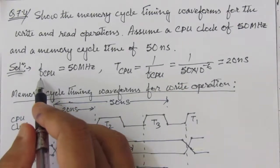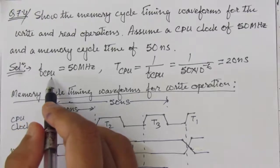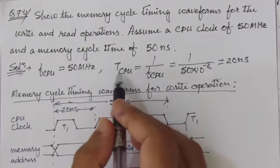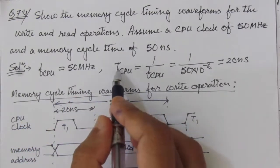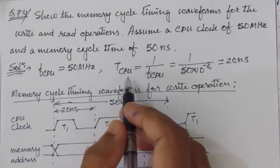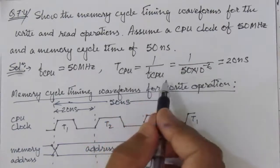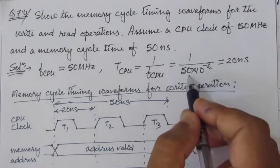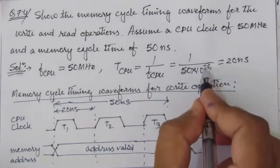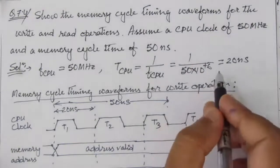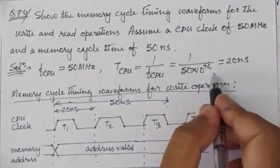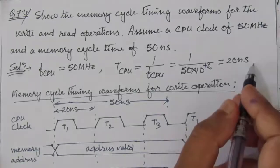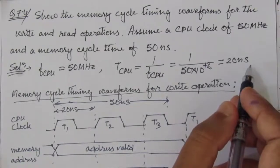We are given that the frequency of the CPU is 50 megahertz, so the time period T is equal to 1 divided by f_cpu, which is 1 divided by 50 megahertz. This gives us 20 nanoseconds — the time period of each clock cycle of the CPU is 20 nanoseconds.